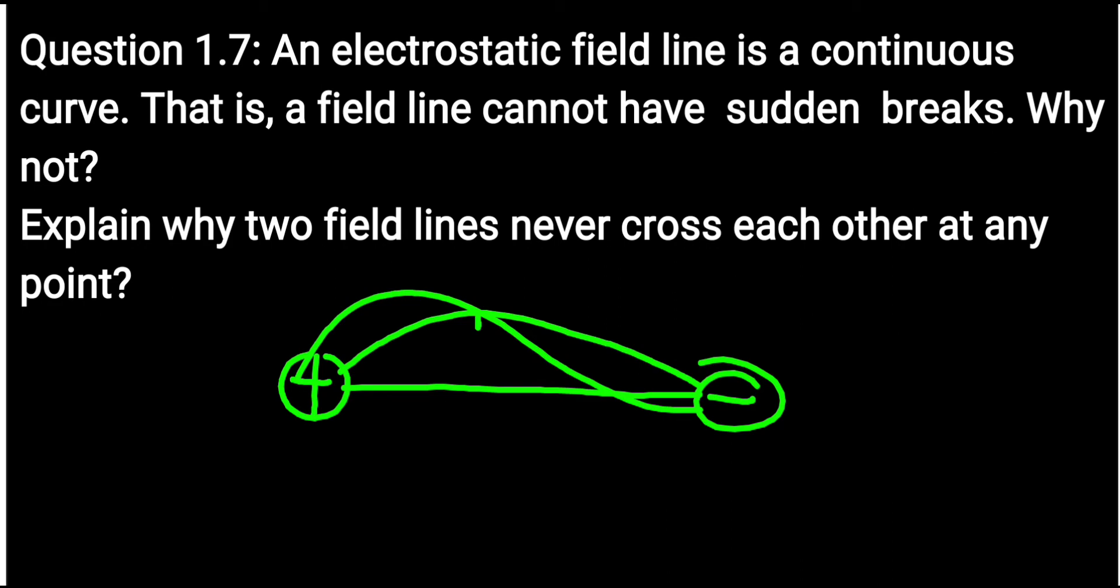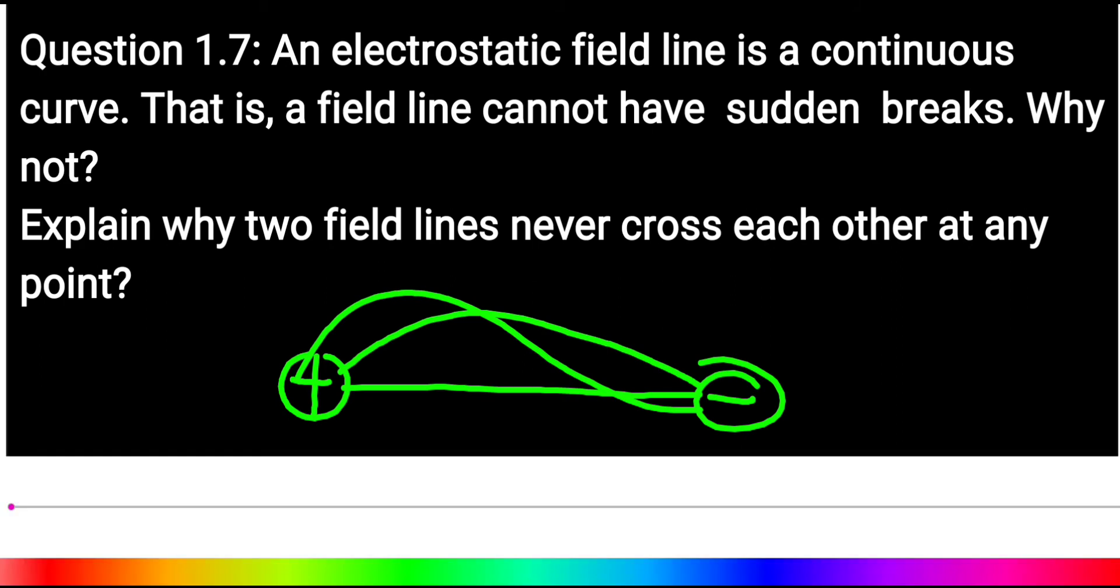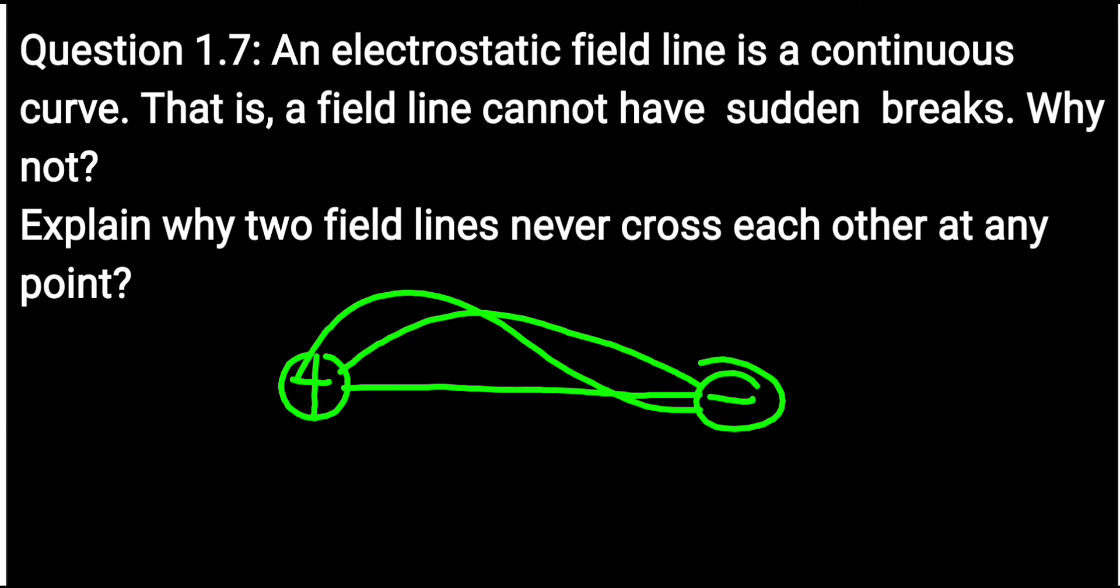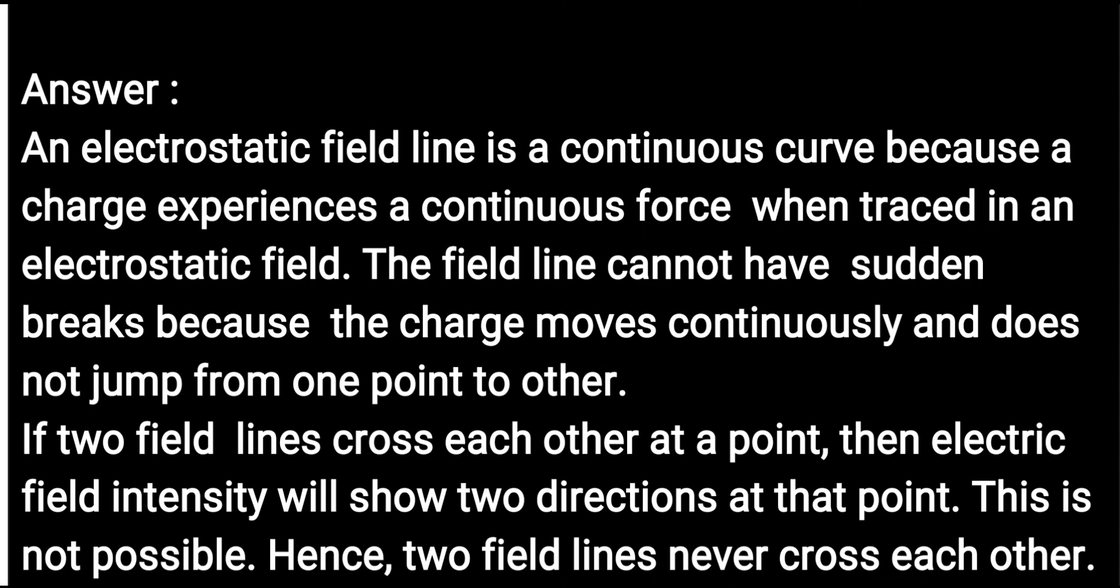It cannot happen. Why? Because you know that the direction of electric field is the tangent at any particular point. If you want to find the direction at this point of intersection, because of this line the direction will be this, and because of this line we will have this direction. So we have two different directions at one point, which is not possible. That's why two field lines never cross each other.